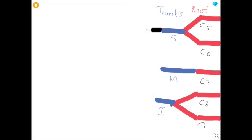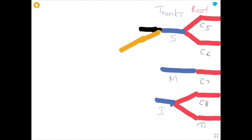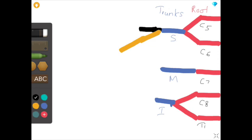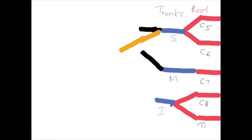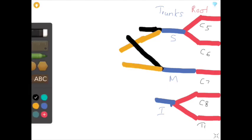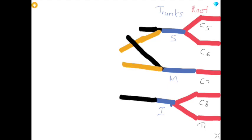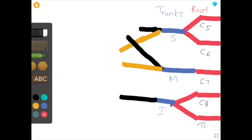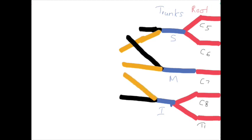Each trunk is divided into anterior and posterior divisions. The black colored lines are anterior divisions and the yellow colored lines are posterior divisions. These are the anterior and posterior divisions of the superior trunk. This is the anterior division and this is the posterior division of the middle trunk. This is the anterior division of the inferior trunk and this is the posterior division.